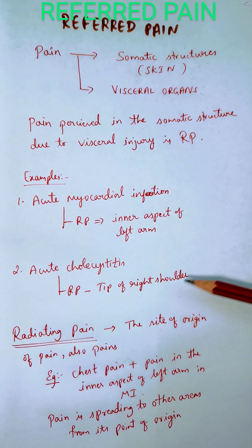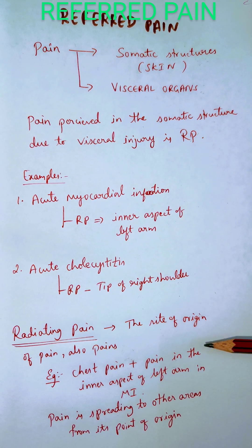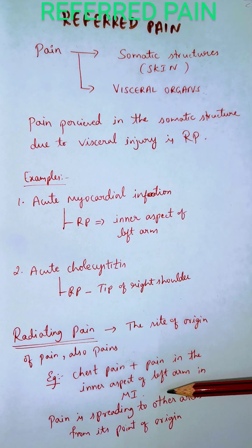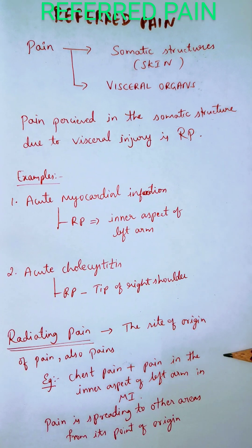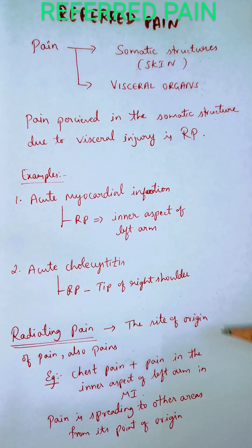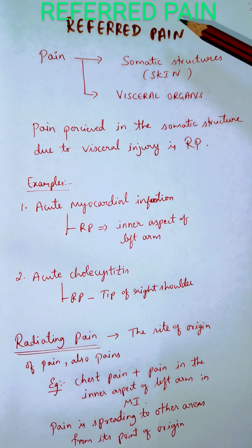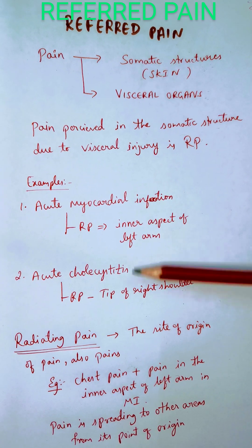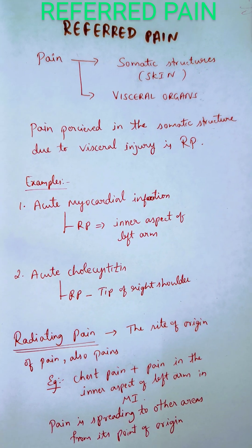So in radiating pain, the pain in the chest area radiates to the arm — the site of origin is also painful while other areas are also involved. It is radiating from the site of origin to other areas. That is what is called radiating pain, and that is the difference between referred pain and radiating pain.